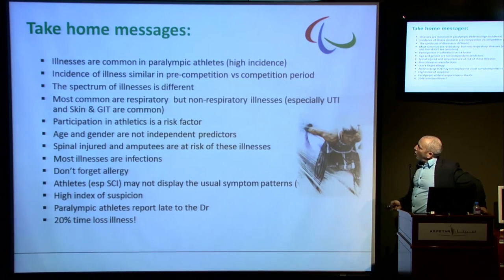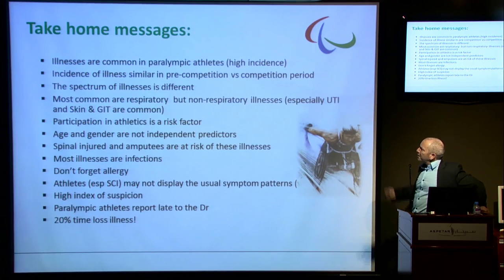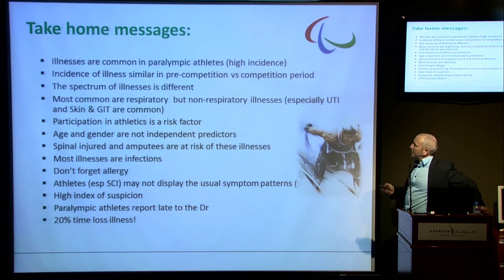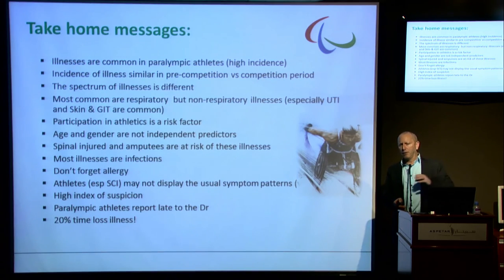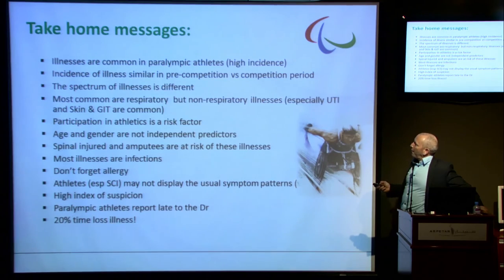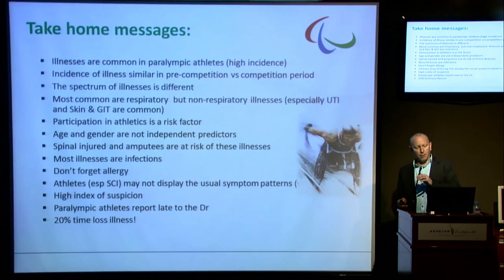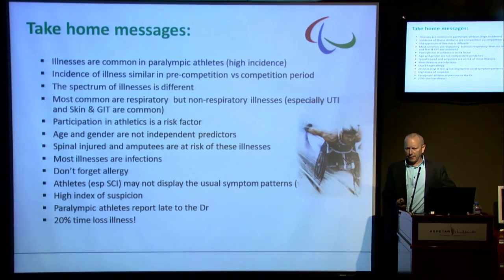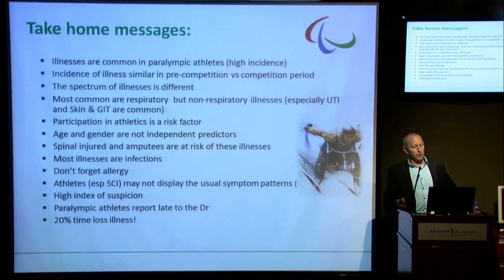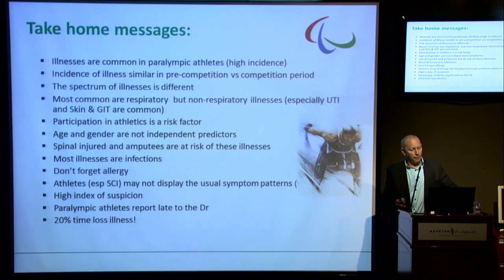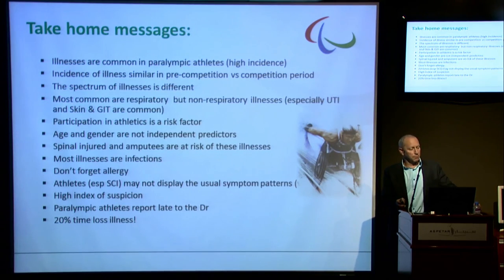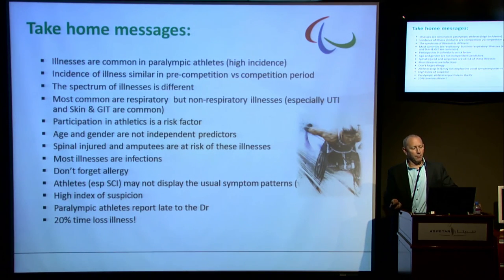The take-home messages are: illnesses are common in Paralympic athletes with high incidence — the same in pre-competition versus competition periods. The spectrum of illnesses in Paralympic athletes differs from able-bodied athletes; most are respiratory, but non-respiratory illnesses including GIT and skin are higher. Participation in athletics is a risk factor. Age and gender are not independent predictors. Spinal cord injured athletes and amputees are most at risk. Most illnesses are infections, and allergies as well. Spinal cord injured athletes may not display usual symptom patterns — maintain a high index of suspicion. Paralympic athletes report late to medical staff, and 20% of illnesses are time-loss.